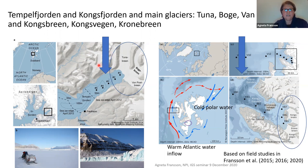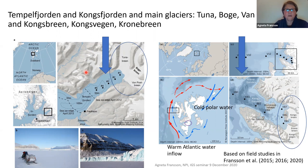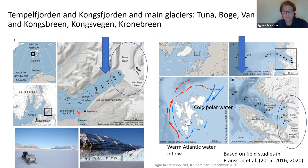Tempelfjorden, on the left-hand side, is a 40-kilometer-long fjord with no pronounced sill. In parts of the fjord there are three main glaciers: Tunabreen, Bogebreen, and Von Postbreen. Tunabreen is a tidewater glacier while the other two are land-terminating glaciers. There is also sea ice in the fjord in winter, but it varies a lot — for example, in 2012 the ice edge was in the middle, and the year after it was further out in the fjord, depending on the year and atmospheric conditions.